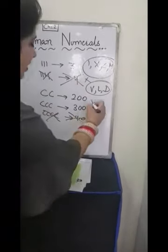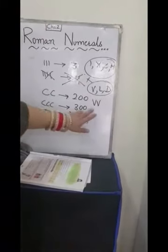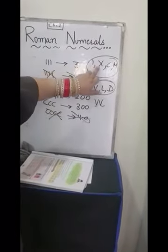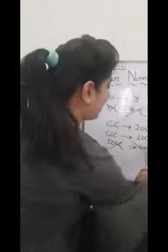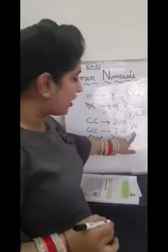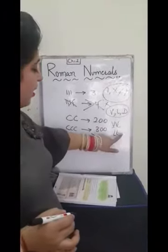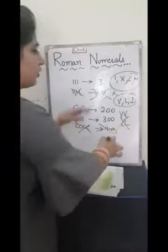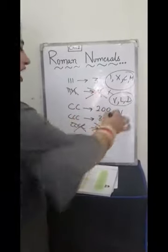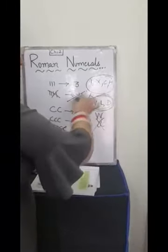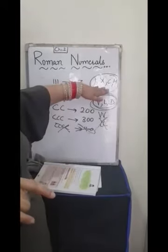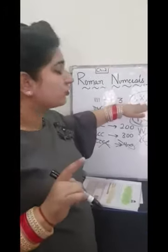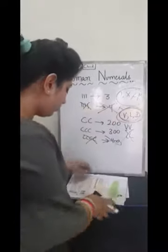Why? See, if I write VV, it means 10 because 5 and 5 is 10. Then what is the use of X? If I write LL, one L stands for 50, another L stands for 50. 50 plus 50 will be 100. Then what is the use of C? So that's why these 3 symbols we will never repeat. We can only repeat these symbols maximum of 3 times.